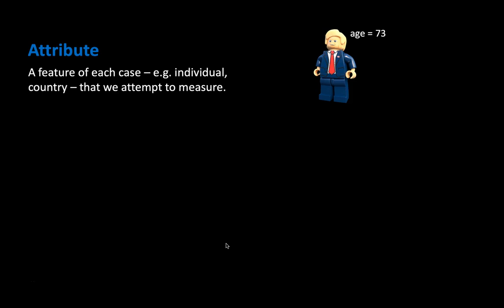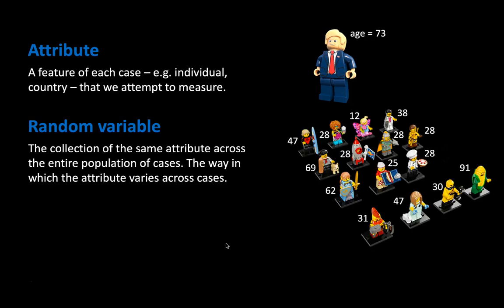For example, if you look at respondents — but this could be countries or parties or whatever — each individual respondent will have a particular attribute. This individual here will have an age attribute; this person happens to be 73 years old. I leave it to you to guess who this is. We can then observe the same attribute across a set of observations. So first we talk about two types of variables. The random variable is how we think of the variable — the way this attribute varies across individuals in the entire population.